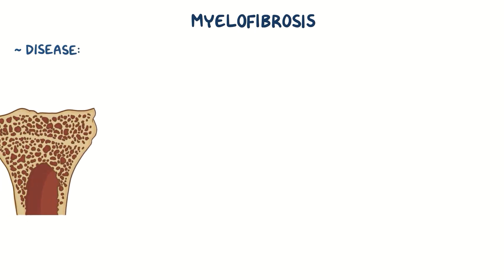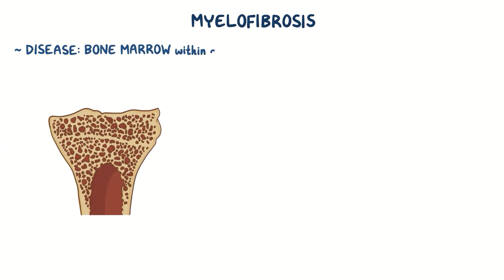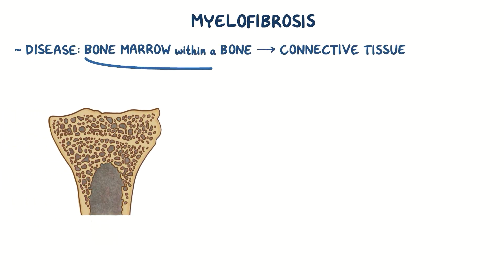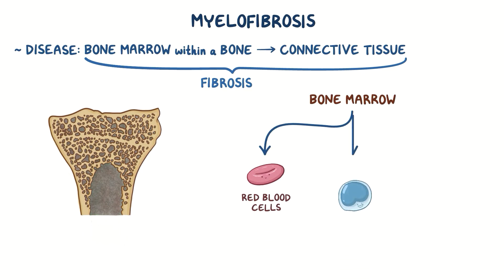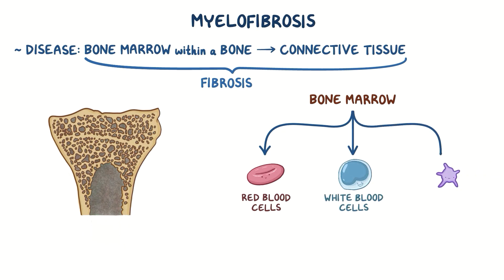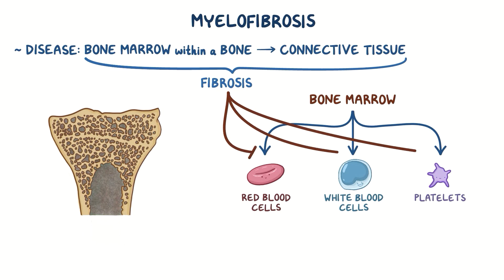Myelofibrosis is a disease in which the bone marrow gets replaced by connective tissue in a process called fibrosis. Since the bone marrow's main role is to produce erythrocytes or red blood cells, leukocytes or white blood cells, and thrombocytes or platelets, the process of fibrosis interferes with production of these cell types.